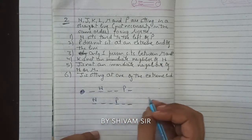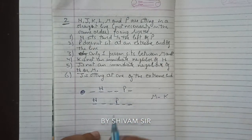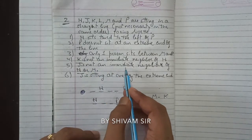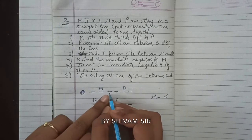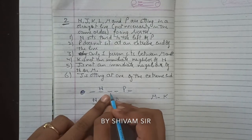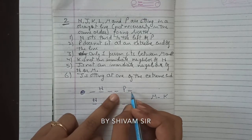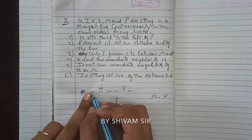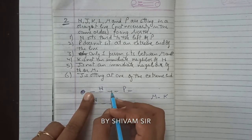Next clue: only one person sits between M and K. So the arrangement is M, dash, K with exactly one person between them. We consider different placements: if M is at one position, K follows with one gap. There are two initial possibilities for this pair.